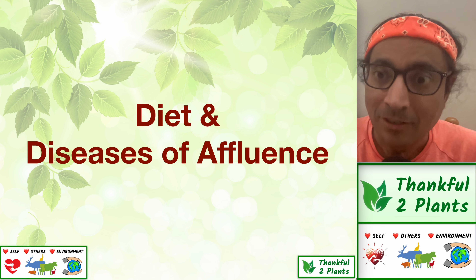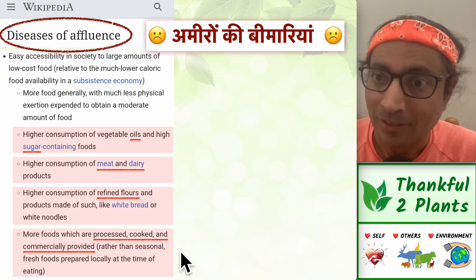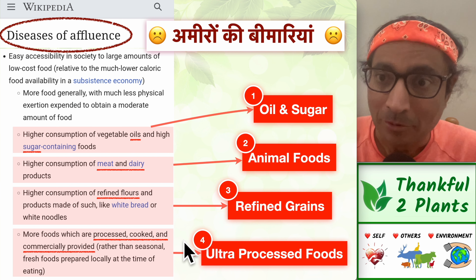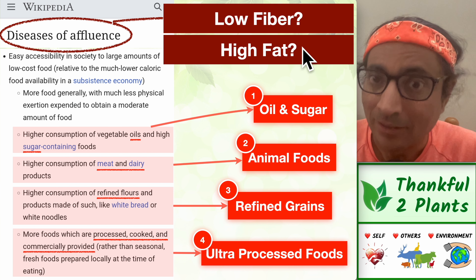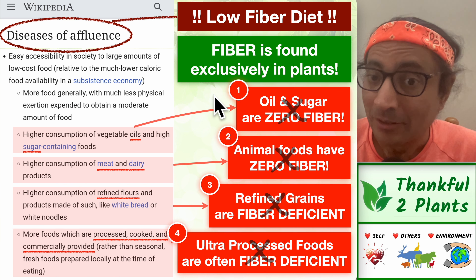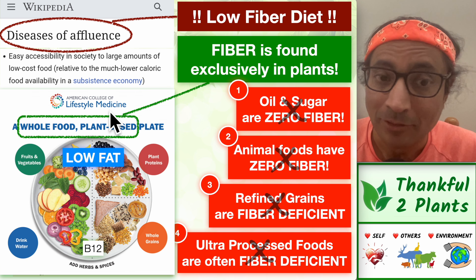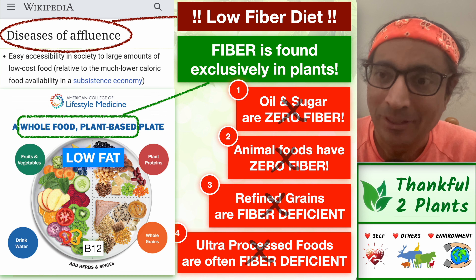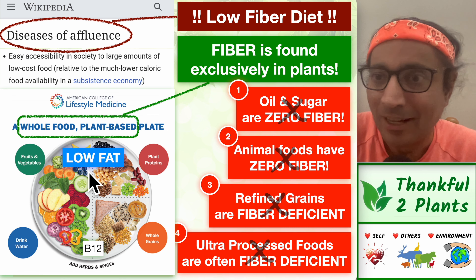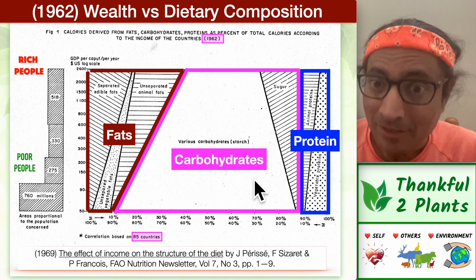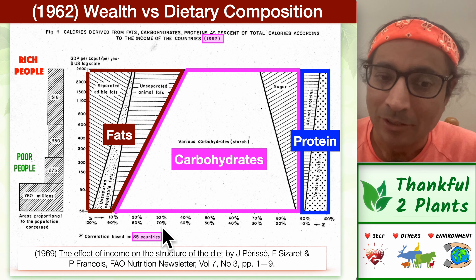Is there a dietary component to the disease of affluence? The Wikipedia article on diseases of affluence lists four dietary factors. In subsequent videos I will go through how higher consumption of these four leads to a lower fiber diet and a higher fat diet. It is possible to forego all four of these dietary components. There is the American College of Lifestyle Medicine — mainstream medicine in the USA — which advocates a whole food plant-based methodology, and we can choose the low-fat version as per Dr. Esselstyn.